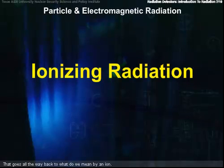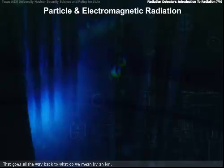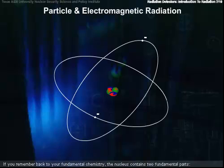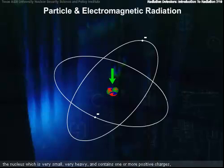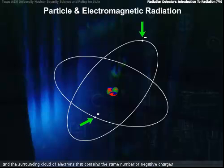That goes all the way back to, what do we mean by an ion? If you remember from your physics and chemistry, neutral atoms contain two fundamental parts, the nucleus, which is very small, very heavy, and contains one or more positive charges, and the surrounding cloud of electrons that contain the same number of negative charges.